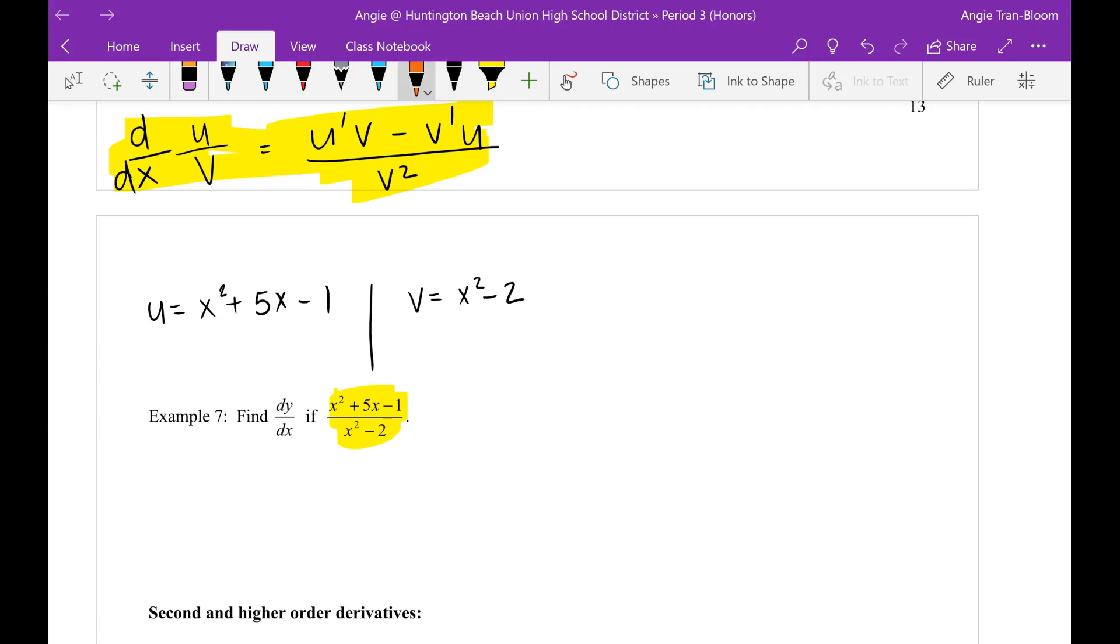With this we can do u prime pretty quickly. That's 2x plus 5. Then over here we can do v prime pretty quickly. That's going to be 2x and the derivative of negative 2, since that's a constant, is just 0.